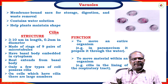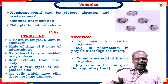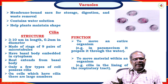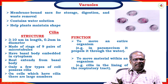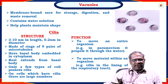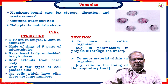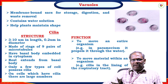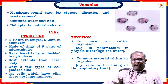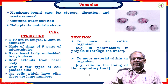Coming to another organelle: cilia. The structure of cilia is 3 to 10 micrometers in length and 0.2 micrometers in diameter. Made of rings of 9 pairs of microtubules with a basal body embedded in the cytoplasm. Only a few types of cells possess cilia, but cells which have cilia have them in large numbers. Major functions: to move an entire organism — for example, in paramecium it propels through the water — and to move material within an organism, such as cilia in the lining of the respiratory tract.